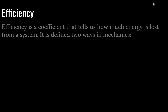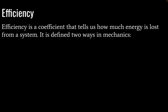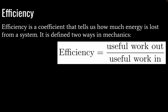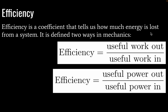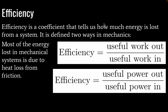Finally, we have efficiency. Efficiency is a coefficient that tells us how much energy is lost from a system. It's defined two ways in mechanics. First, efficiency equals useful work out divided by useful work into a system — we always put more work in than we get out, due to inevitable heat loss. Second, efficiency equals useful power out divided by useful power in. Since power equals work divided by time, this is just a slightly different form of the same equation. Energy is lost due to friction, air resistance, and potentially other factors.